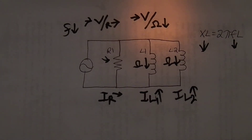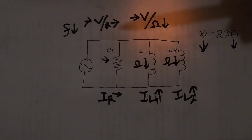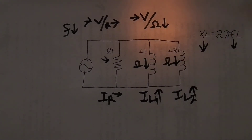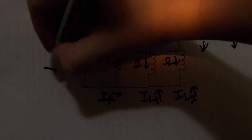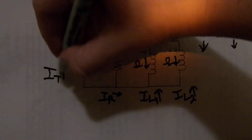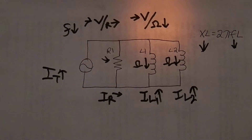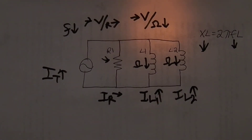Now we can figure out total current. You have one current that stays the same, one current that goes up, and another current that goes up. If I have one branch that stays the same and two branches that have current going up, then it makes sense that total current is going up. And that is how we do arrow logic in an RL parallel circuit.